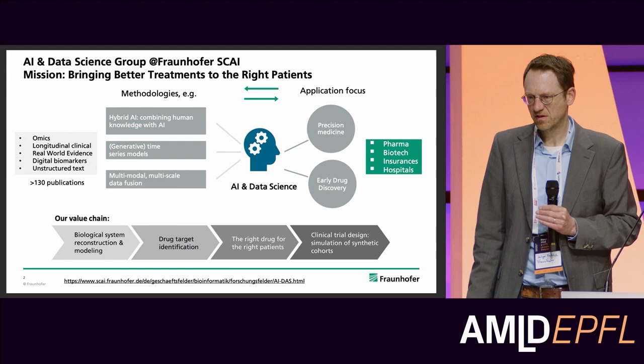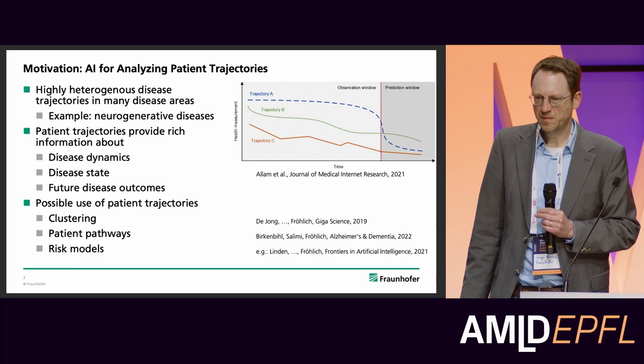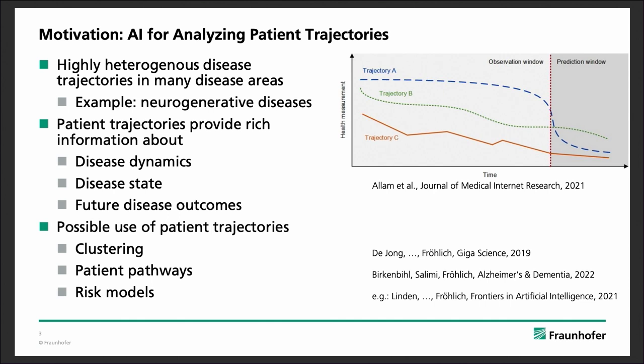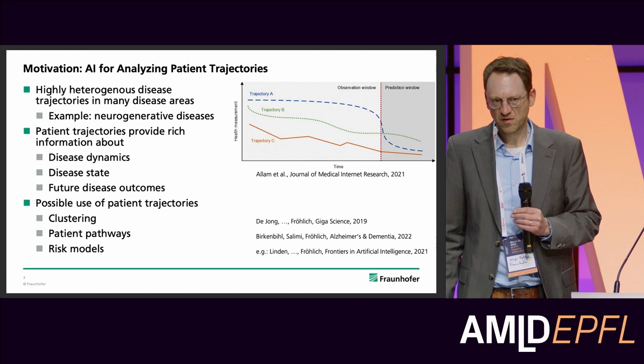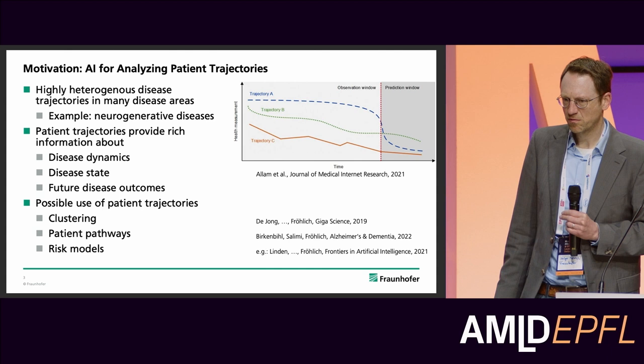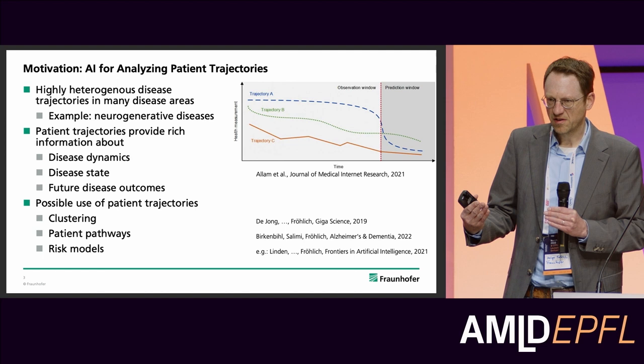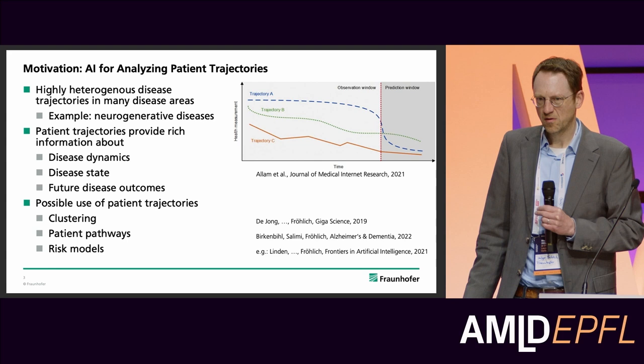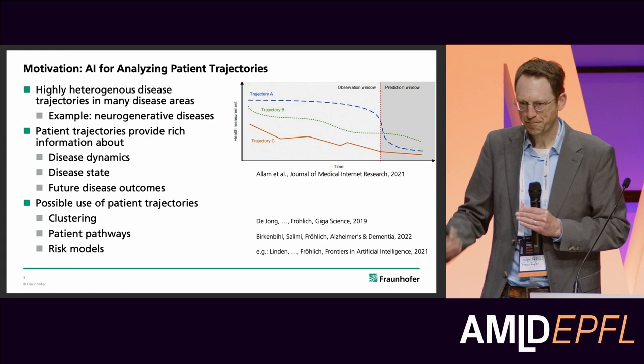Today I want to focus specifically on precision medicine, where one key aspect is understanding many diseases from a longitudinal perspective. Diseases often have a certain development, a certain progression — a certain trajectory — and this trajectory can be very heterogeneous across different patients. A particular example is neurodegenerative diseases such as Parkinson's disease, which have an incredibly high variability in symptomatic presentation and in how the disease progresses over time.